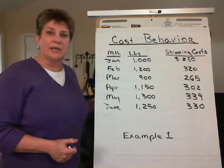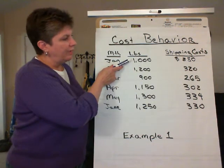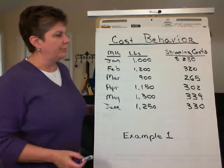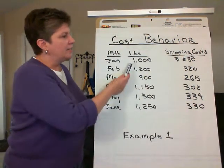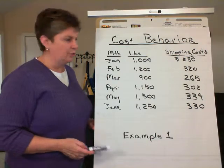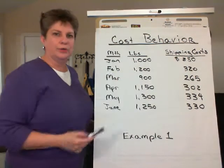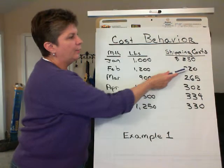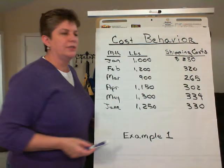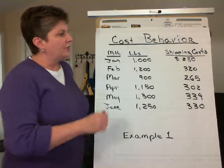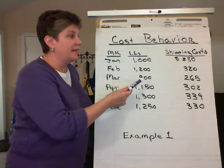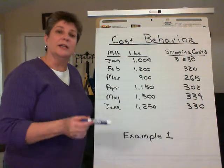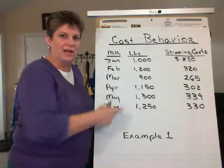How do we know this is a mixed cost? Let's take a look at the data. At 1,000 pounds, our shipping cost is a total of $280. At 1,200 pounds, our shipping cost is a total of $320. While total cost is increasing as activity increases, it is not in proportion to the change in activity — a one-fifth, or 20%, increase in pounds shipped, but the cost did not increase by 20%. So we've got a cost that is part variable because the total increases as activity increases, but that increase is not proportional to the change in activity.